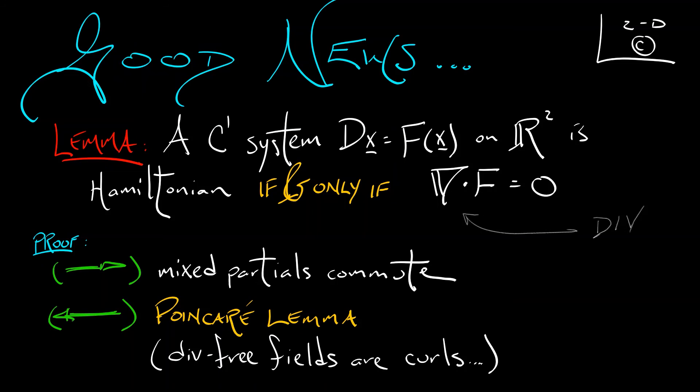That's kind of the clunky way to do it. There are fancier versions of the Poincaré Lemma that allow us to conclude this automatically. One way or the other, the important thing to remember is that if the divergence is zero, you get a Hamiltonian system. That's very nice. Only works in the plane, only works in 2D continuous time, but it does work.